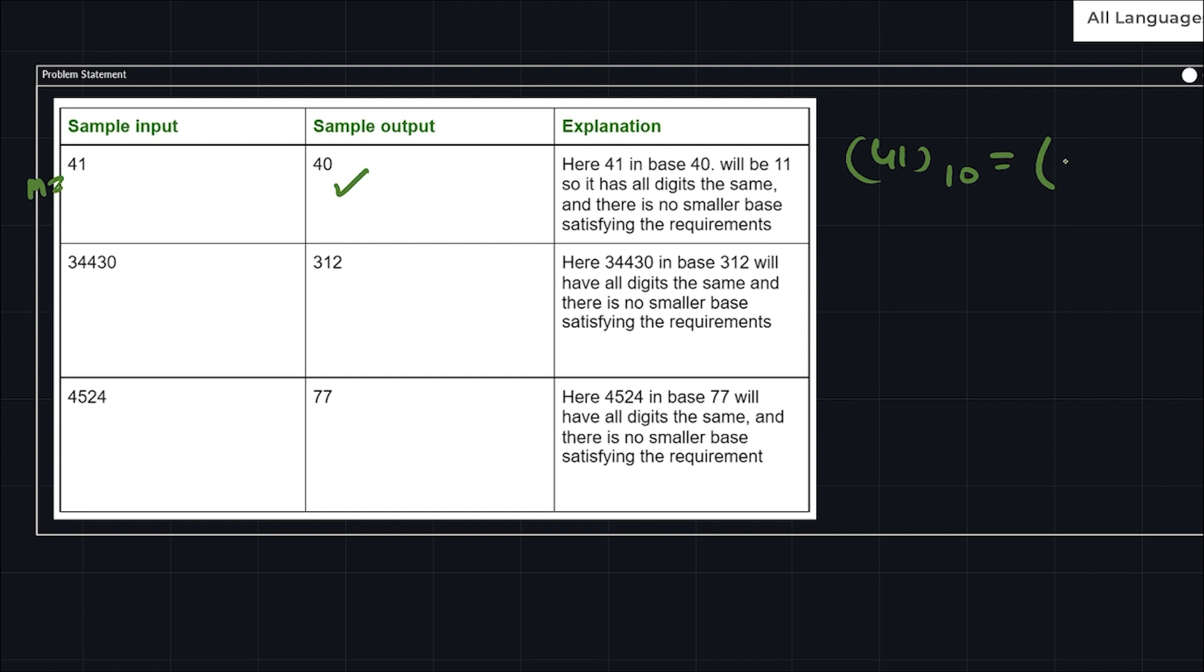How? See, 41 is in base 10. If we find another numbering system, it will be base 40. So 41 in base 40 we will get 11, and 11 is identical because one one is the same digit. Let me take another example: 34430 is in base 10 and if we convert it into base 312, we will get all the digits the same. In the last example, 4524 in base 10, if we convert it into base 77, we will get all the numbers the same.